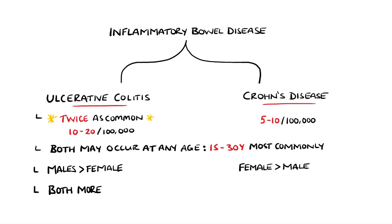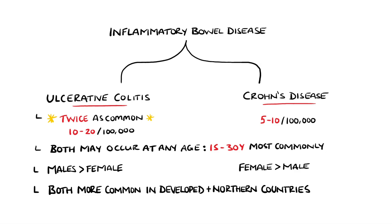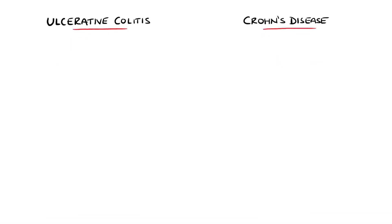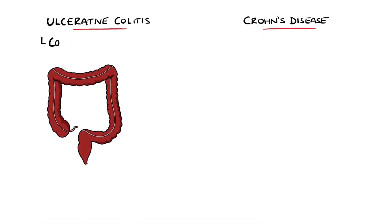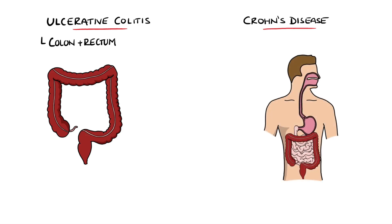Both ulcerative colitis and Crohn's disease are typically seen more commonly in developed and northern countries. Another difference between the two is that ulcerative colitis is confined to the colon and rectum, while Crohn's disease may affect anywhere along the GI tract, from the mouth to the anus.